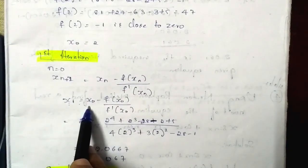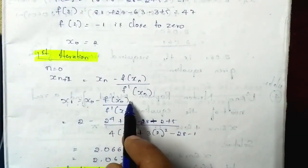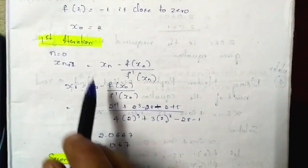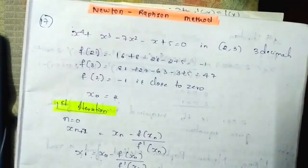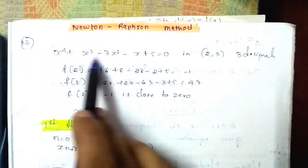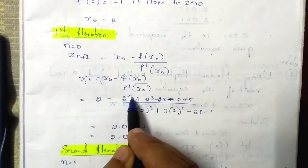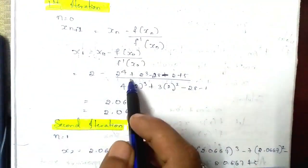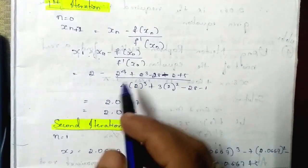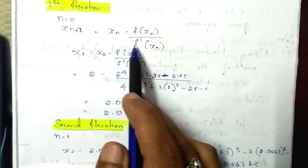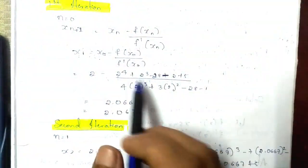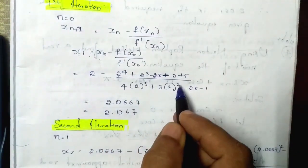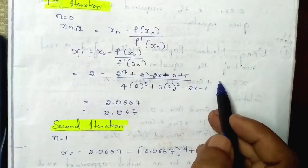x₁ equals x naught minus f(x naught) divided by f'(x naught). The x naught value is 2. So the numerator is 2⁴ plus 2³ minus 28 minus 2 plus 5, and the denominator f'(x naught) is obtained by differentiating once: 4 into 2³ plus 3 into 2² minus 28 minus 1. This is the required expression.